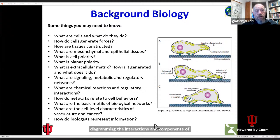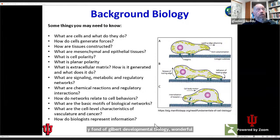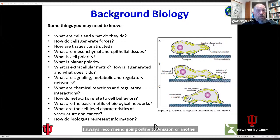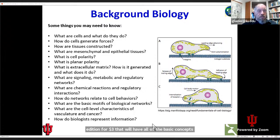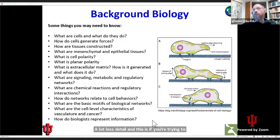I'm very fond of Gilbert's Developmental Biology — it's a wonderful textbook. I always recommend going online to Amazon or another secondhand book dealer; don't buy the latest edition for $300. Buy a 20-year-old edition for $3. That will have all the basic concepts in it with a lot less detail, and if you're trying to introduce yourself to biology, it's a wonderful way to do it.